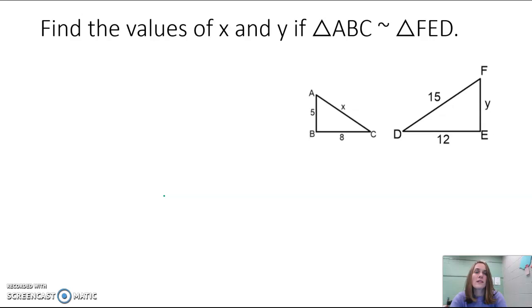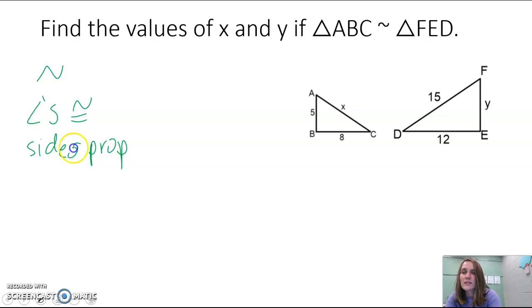So if they're similar, that means that if we have similarity, your angles are congruent and your sides are proportional. And if we look at this problem, we don't have anything about the angles, we're not asked about the angles, we're asked about sides.